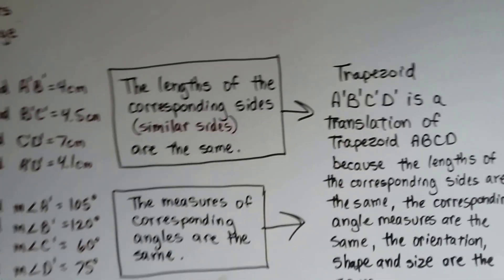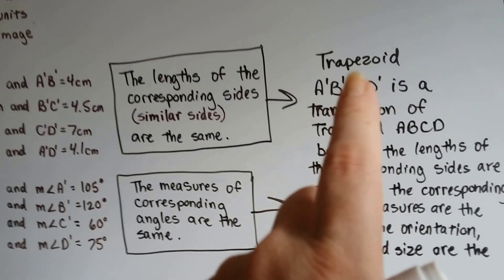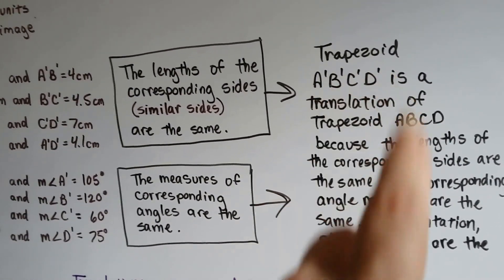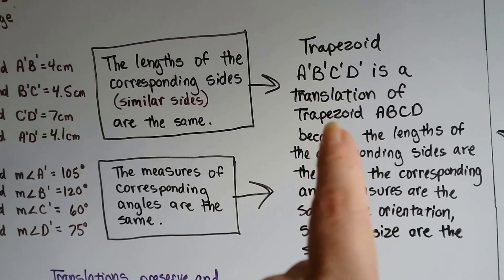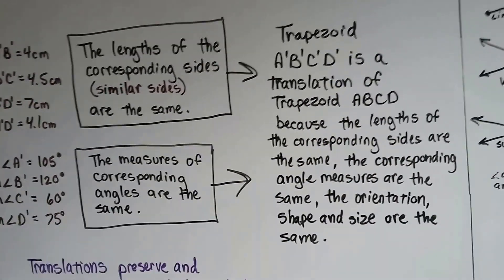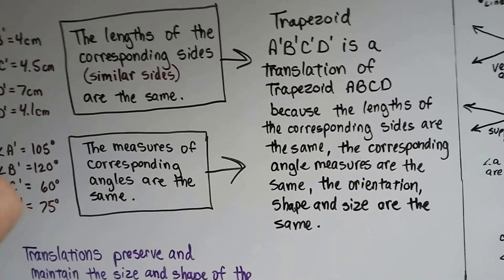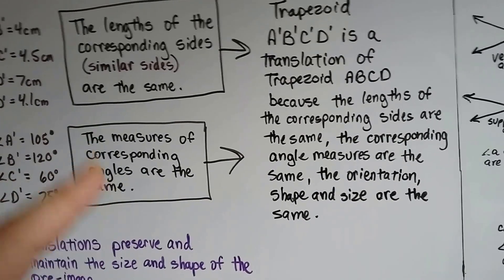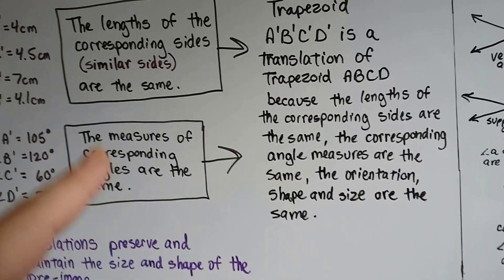The measures of the corresponding angles are the same. For trapezoid A prime B prime C prime D prime, it's a translation of trapezoid ABCD because the length of the corresponding sides are the same and the corresponding angle measures are the same.